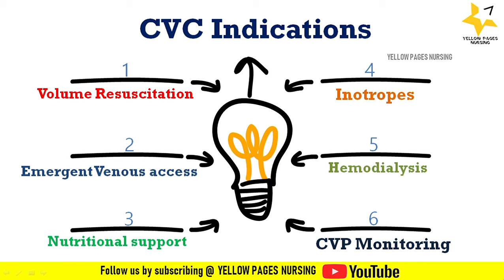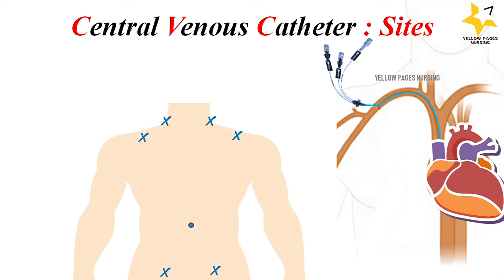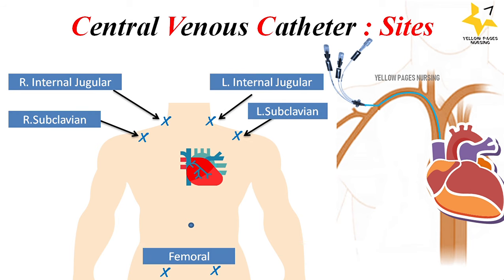The next indication is central venous hemodialysis — to connect a person with kidney failure to a hemodialysis machine that clears the body of waste and extra fluid. Another indication is central venous pressure monitoring. Common sites for inserting a central venous catheter are the internal jugular vein (right and left), subclavian vein (right and left), and femoral vein.